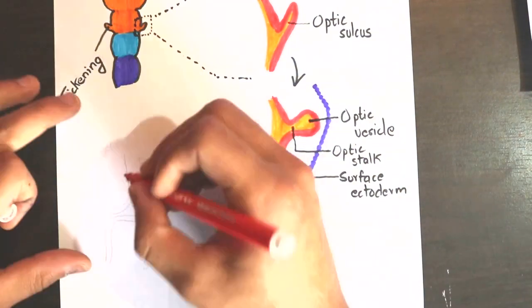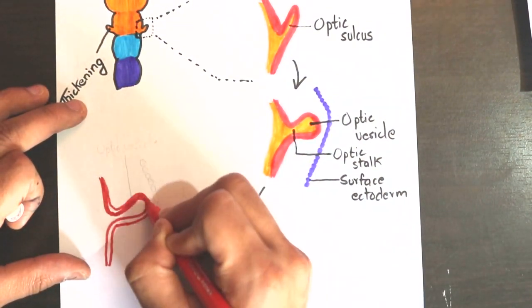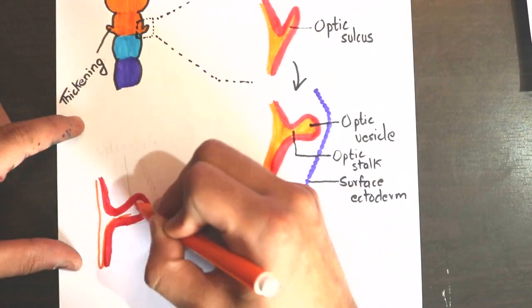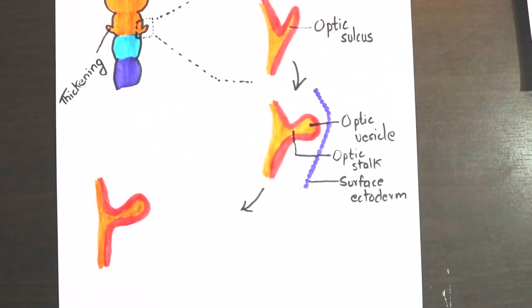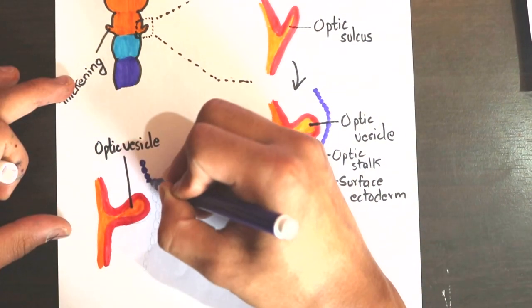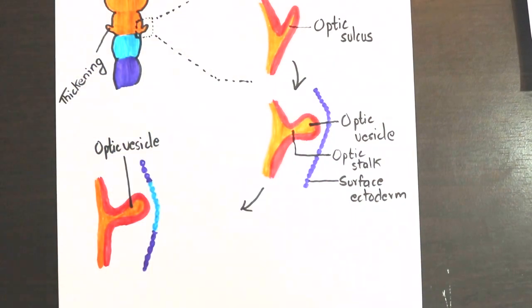The optic vesicle grows laterally and comes in contact with the surface ectoderm. The surface ectoderm overlying the optic vesicle becomes thickened to form the lens placode.